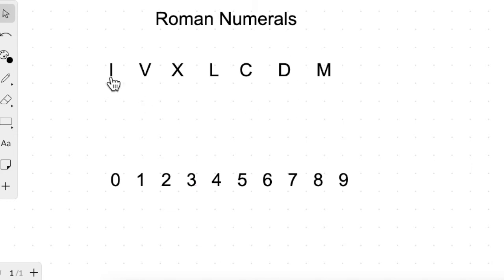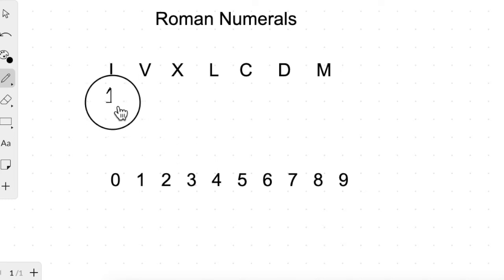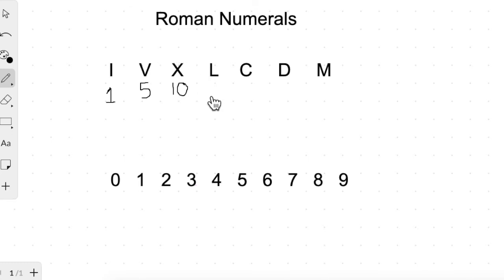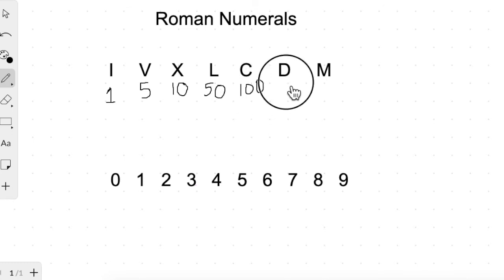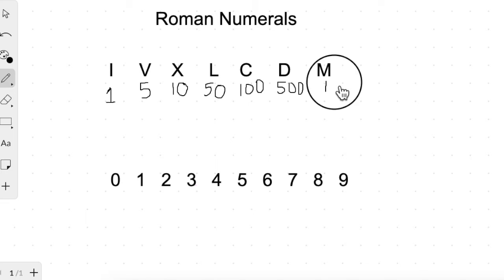In Roman numerals, these are the seven letters we have, and we write numbers using these letters. Let us see what each symbol represents. I represents 1, V represents 5, X represents 10, L represents 50, C stands for 100, D stands for 500, and M is for 1,000.